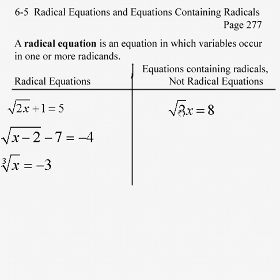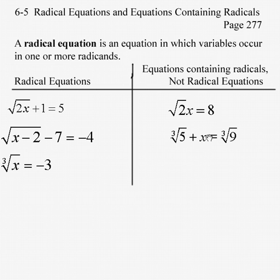This is the square root of 2 times x. X is not under the radical sign, not part of the radicand — it's not a radical equation, but it's an equation that contains a radical in it. Likewise, the cube root of 5 plus x equals the cube root of 9 — x is not under the radical sign.